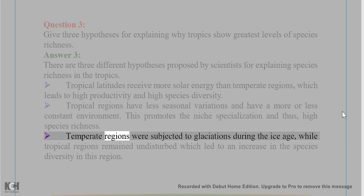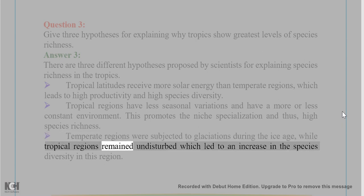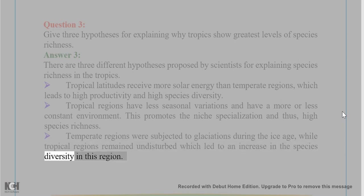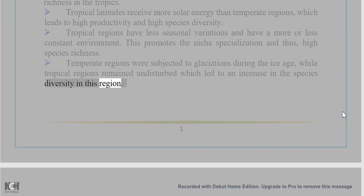Temperate regions were subjected to glaciations during the Ice Age, while tropical regions remained undisturbed, which led to an increase in species diversity in the tropical region.